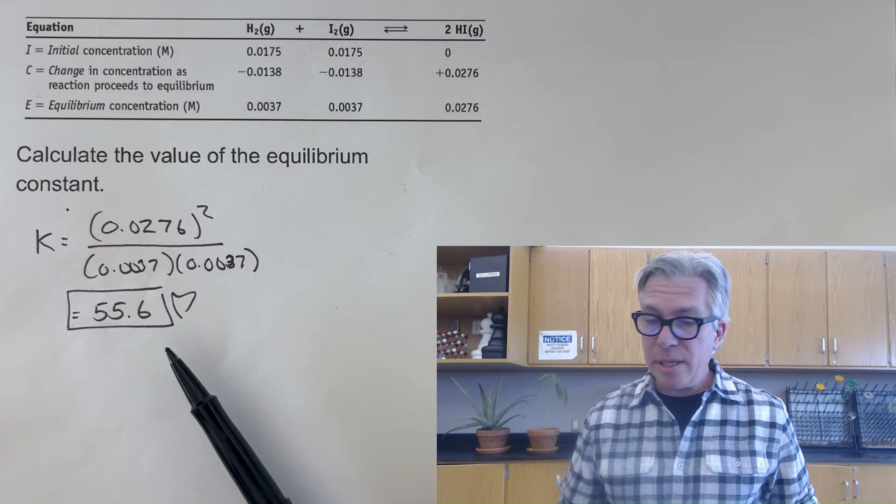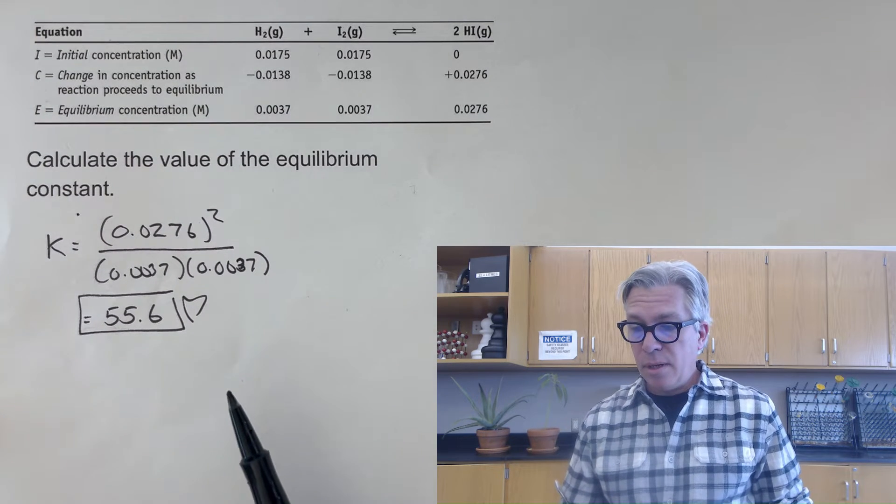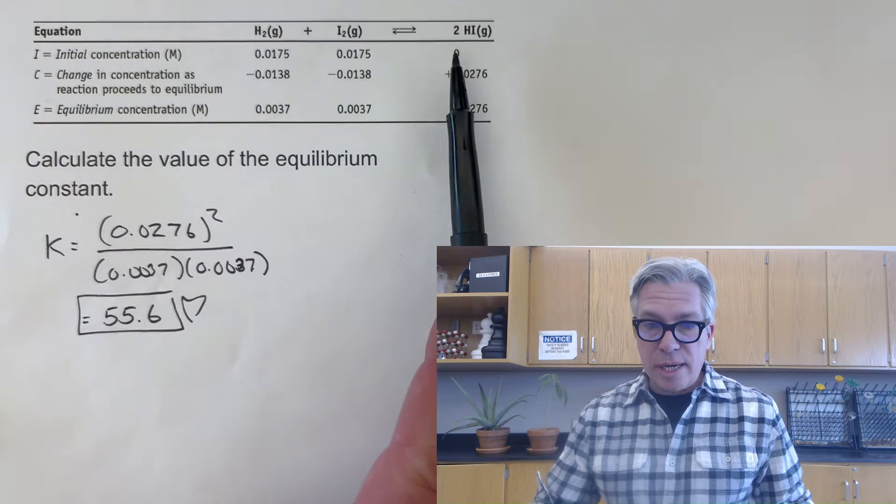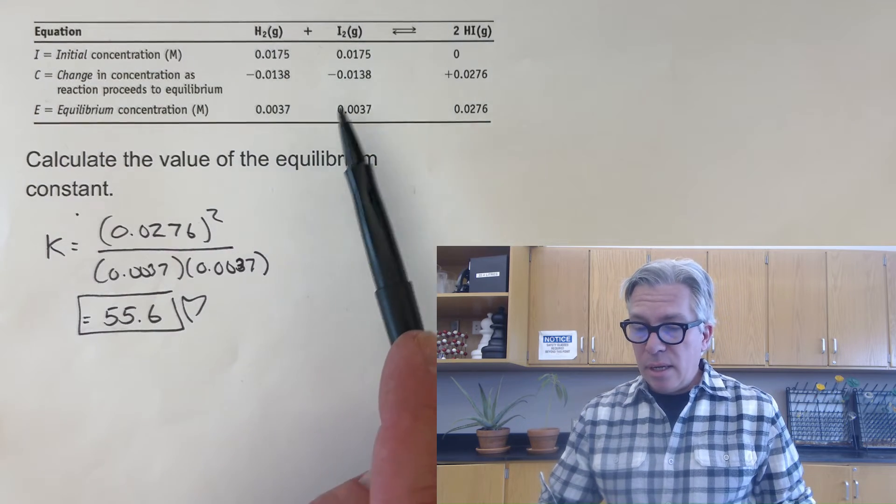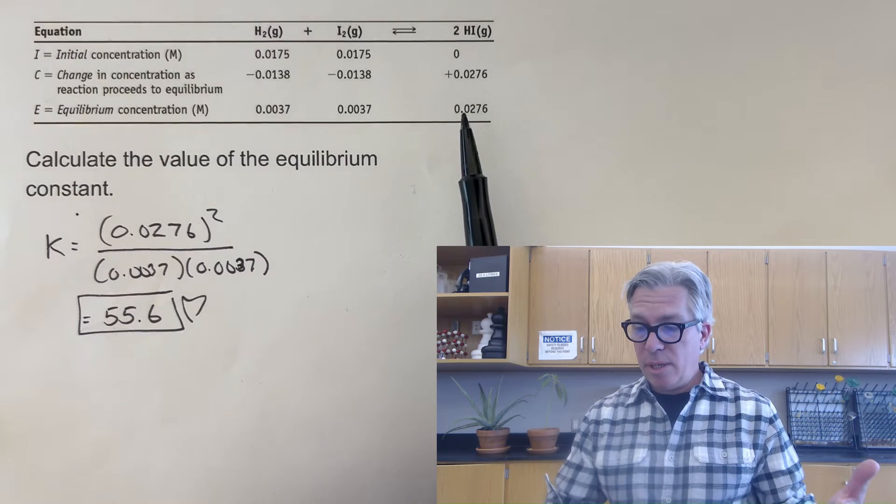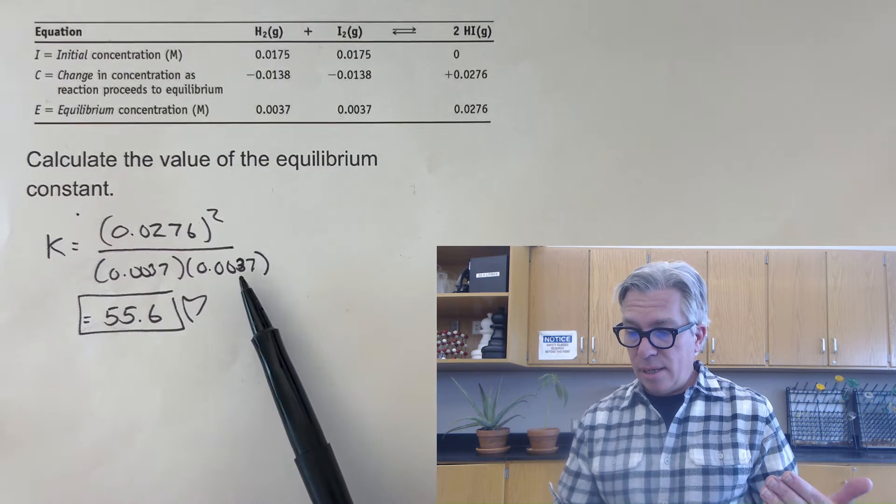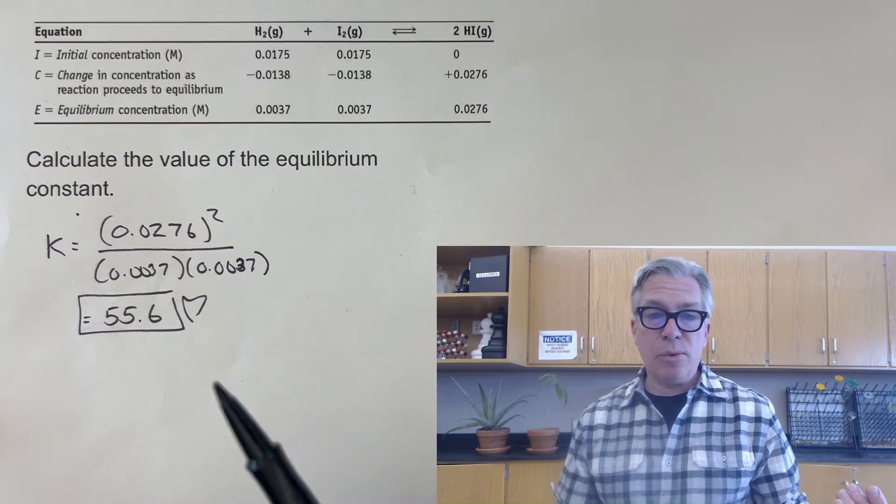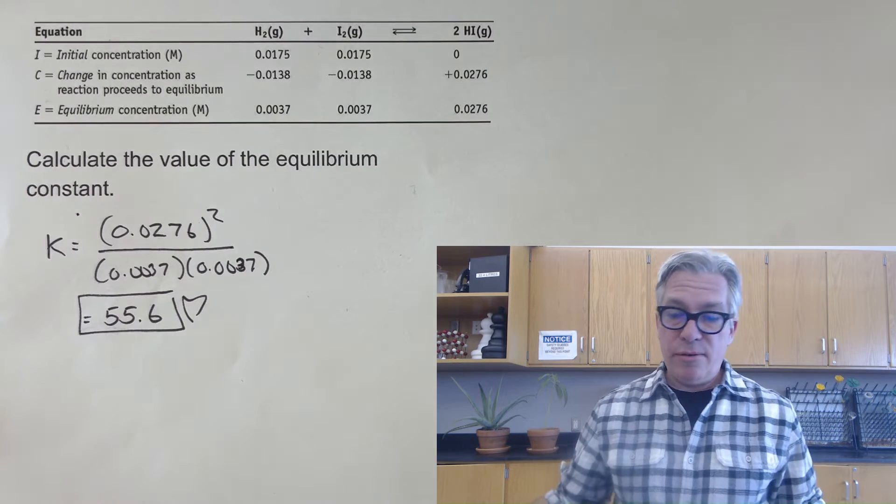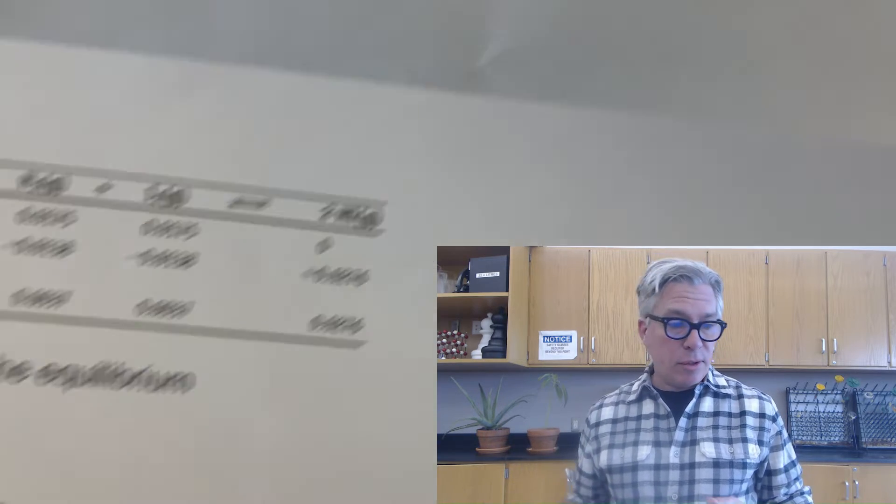I'm starting here with a repeat of a slide from a previous video where we were looking at a particular reaction and we were given an ice table with final concentrations and we were asked to find the equilibrium constant. So we just take our equilibrium conditions, put them in and tap the calculator and we ended up with an equilibrium constant of 55.6. That was great, nice straightforward problem.